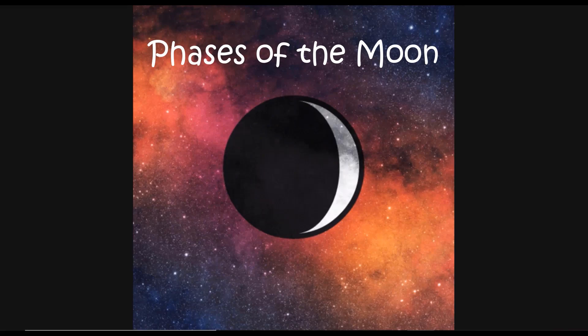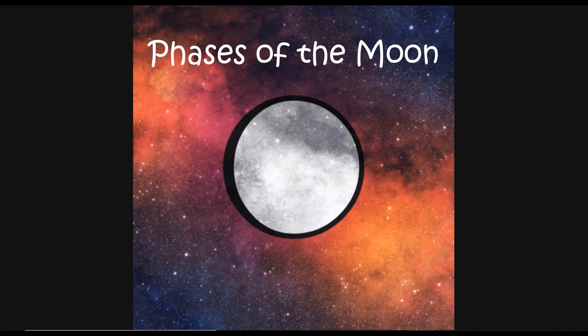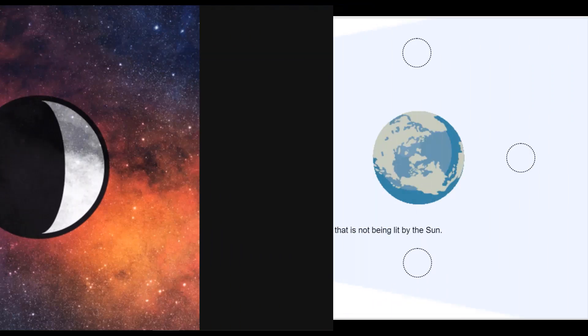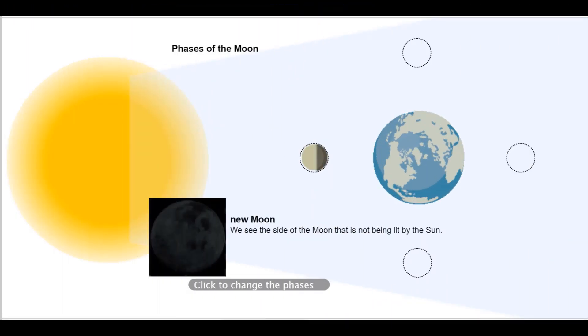And now we are going to talk a little bit about the phases of the moon. Y ahora vamos a hablar un poquito de las fases de la luna. Depending on where the moon is located, we can find four different phases of the moon. Dependiendo de donde se encuentre la luna, podemos diferenciar cuatro fases distintas.